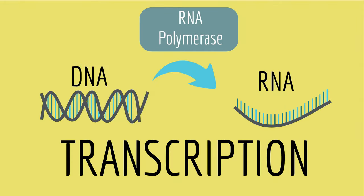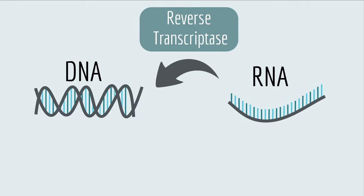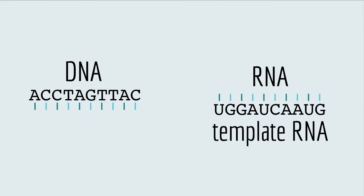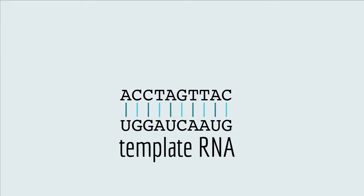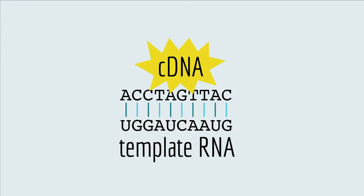Remember, transcription is when RNA polymerase copies DNA to make an RNA molecule. Well, reverse transcriptase copies RNA to make a DNA molecule — that's why it's called reverse. Since reverse transcriptase uses the RNA molecule as a template, the sequence of that new DNA molecule is complementary to the RNA. So we call it cDNA. Once you have cDNA, that's just regular DNA you can use as a template for a regular PCR reaction. But since you started by copying RNA into DNA using reverse transcription, we call it reverse transcription PCR.